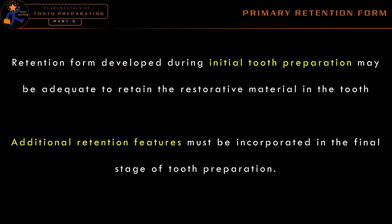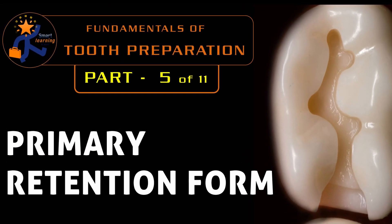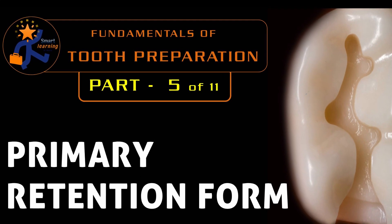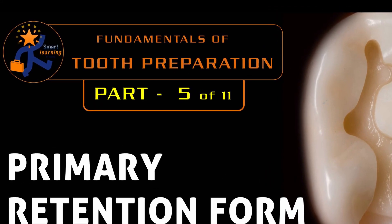The retention provided in initial tooth preparation is adequate in most circumstances. But because of extensive decay or inadequate remaining tooth structure, additional retention may be needed in some cases, and it can be provided in the final stage of tooth preparation. I hope this is adequate to understand about the primary retention form. We will continue with the convenience form in the next video. Thank you for watching.